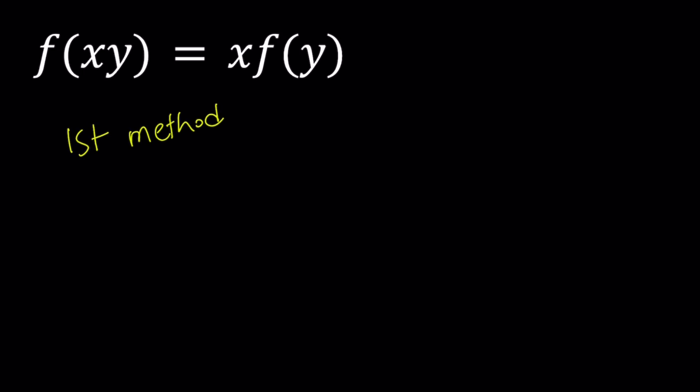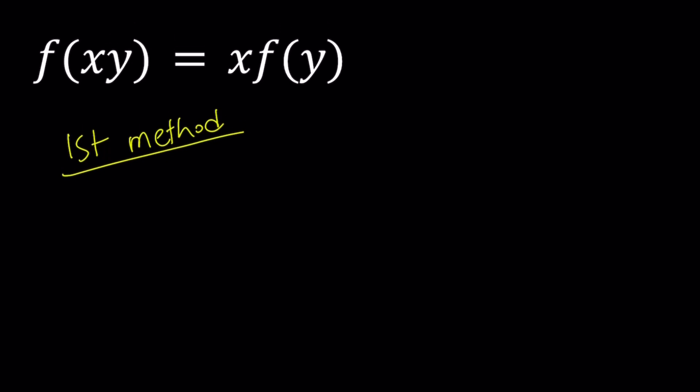So we have a continuous function, I forgot to say, f is continuous, and we're going to be solving this functional equation. We're going to try to find f of x. So, my first method involves the following. I'm going to replace x with y and y with x, so in other words, I'm going to switch them around.